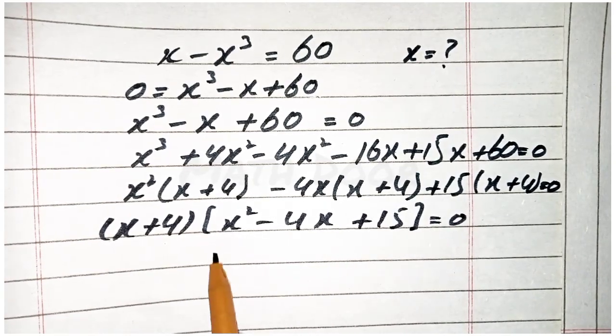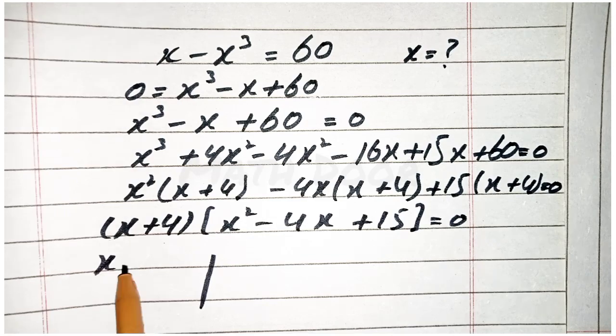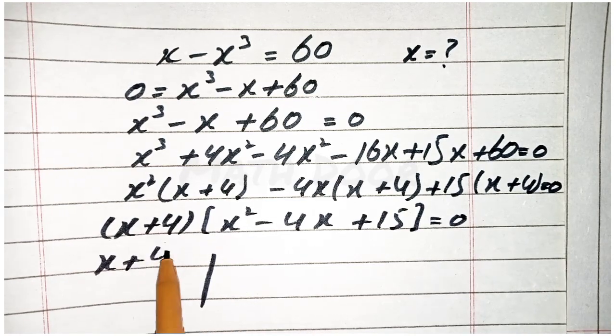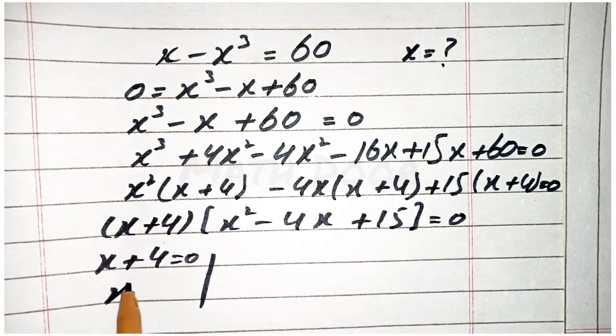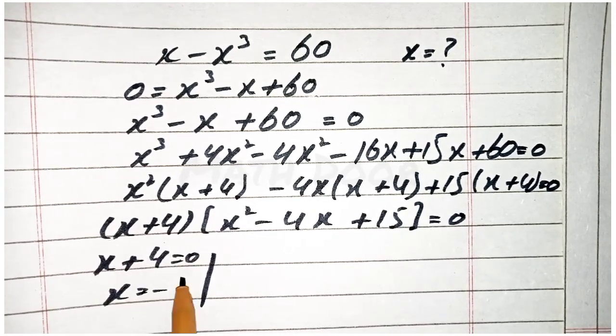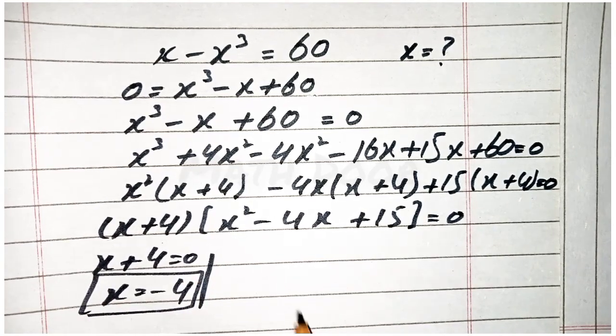We have two factors. One is that x plus 4 is equal to 0, so x is equal to minus 4. This is one factor of x.